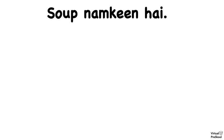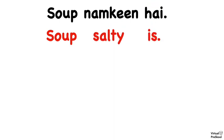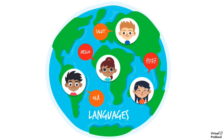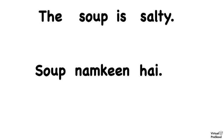Let's look at the word order: salty is. So what that tells us is that the order of the words is not the same in Hindi and English. And that's true for most languages of the world. Every language has its own rules and ways for it to be spoken. In English, the word salty is at the end of the sentence after the verb is. But in Hindi, namkeen, which means salty, comes before the verb hai.